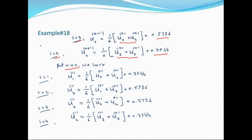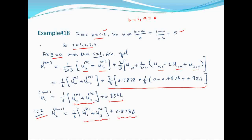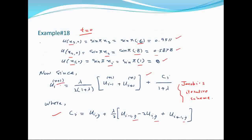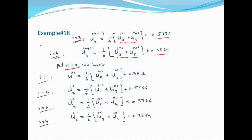अब iterations apply करेंगे। n number of iterations को show करता है। n=0 put करने पर left-hand side पर level 1 आएगा। यह चार equations (i=1,2,3,4 के लिए) हैं और n=0 right-hand side पर put करने पर first iteration आती है।